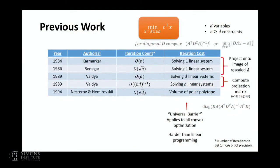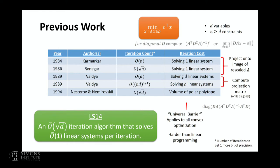Until fairly recently, this looked like the state of the art — you can get methods that depend better on the intrinsic dimension d rather than the number of constraints n, if you were willing to spend more time per iteration, with a natural trade-off. The main results I'm building up to in this talk is work Yin Tat Lee and I did in the last few years, showing you need not have such a bad trade-off: you can get an algorithm that up to polylogarithmic factors has the same convergence rate as the universal barrier, while having iteration costs comparable to Renegar's algorithm.